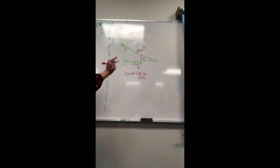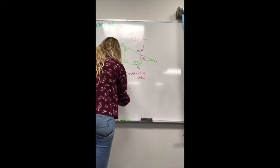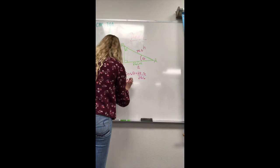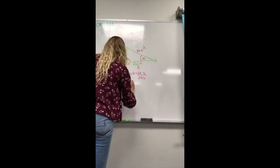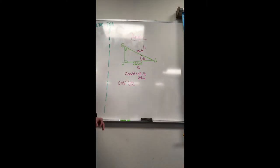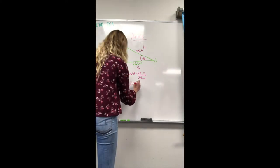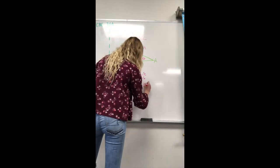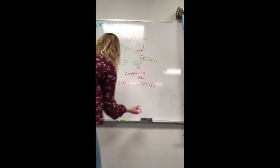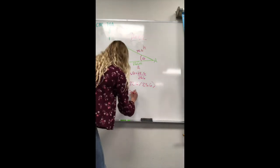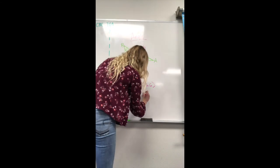To find the angle in your calculator, you're going to hit second cosine, put in 22.6 divided by 25.6, and your answer is going to be 28.2 degrees. That's your angle.